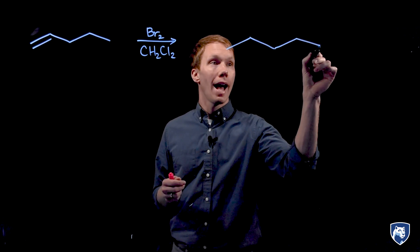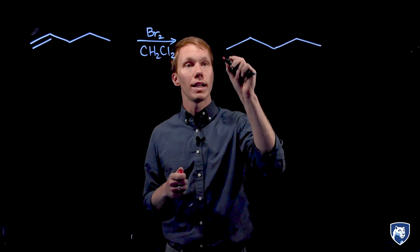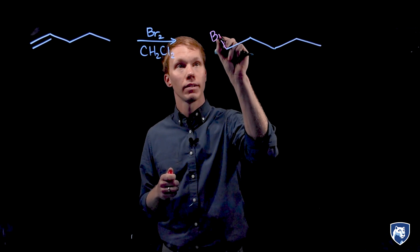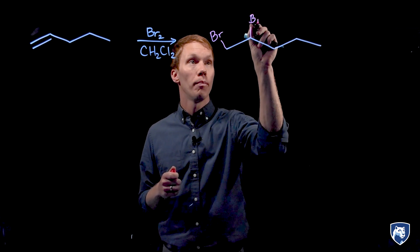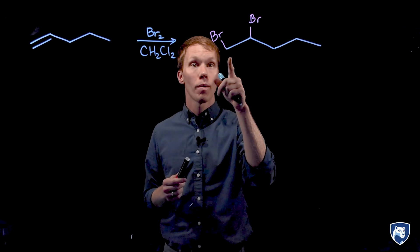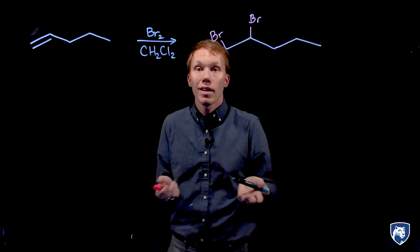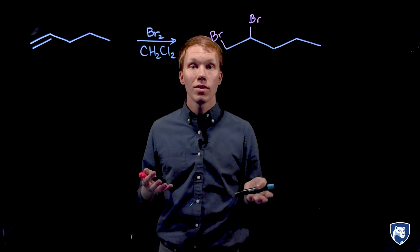As we saw previously, we will add one bromine to each carbon of the alkene. Since both carbons are forming new bonds to bromine, there is no regio selectivity to consider here.